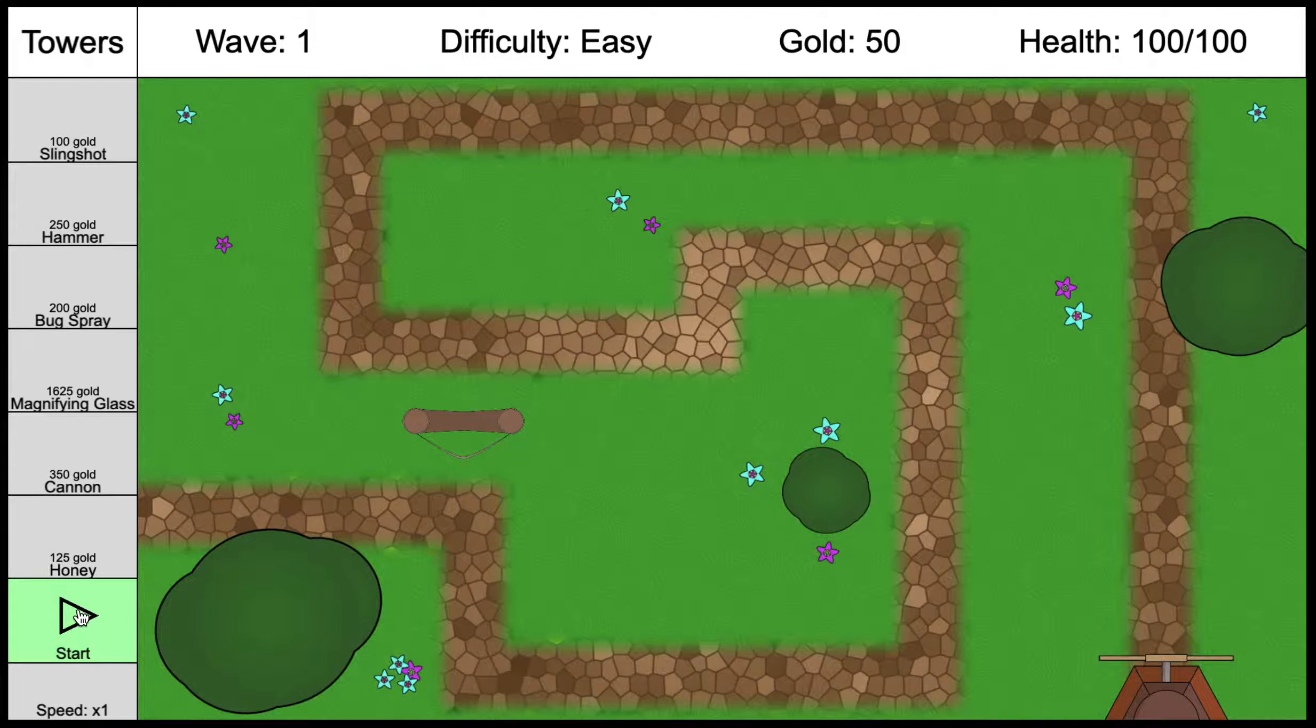Now we can click start, and you'll see it's going to send one ant through. It just does a little teaser, a little tester, so that you know what to expect. There goes our ant. When it gets within range of the tower, the tower will shoot it. So now wave one is done. We've gained one gold from killing that ant. Now you can see down here this has turned into a green button again with a play button to start wave two.